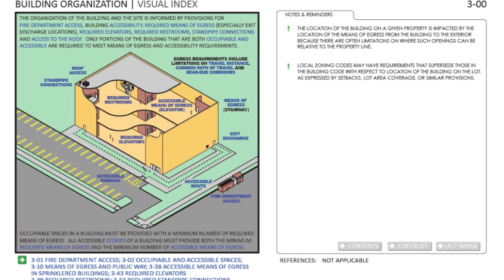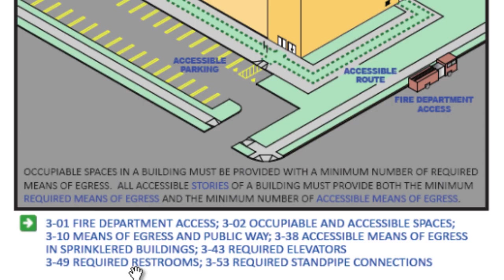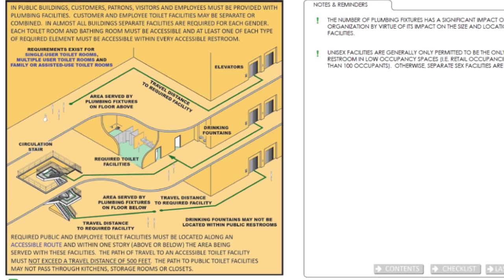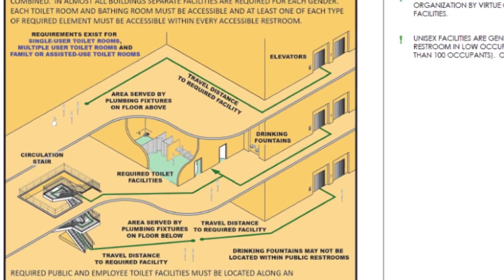Each of the seven chapters starts with an illustrated page that lays out the content of the chapter. From here, we can look into fire department access requirements that might affect how the site is organized, or requirements for restroom locations that have a role in developing the floor plan.